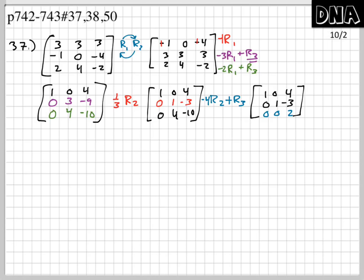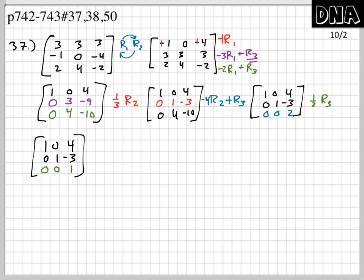The last step for row echelon form: make that 2 a 1 by multiplying row 3 by 1/2. So the matrix becomes: row 1: 1, 0, 4; row 2: 0, 1, −3; row 3: 0, 0, 1. This is row echelon form — all leading entries are 1s and they appear in echelon order with zeros underneath them.